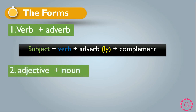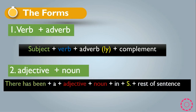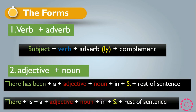The second form is adjective plus noun. The rule is: 'There has been + a + adjective + noun + in + subject + the rest of the sentence.' There is also another option: 'There + is + a + adjective + noun + in + subject + the rest of the sentence.'